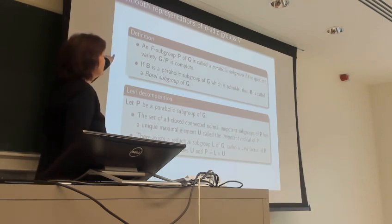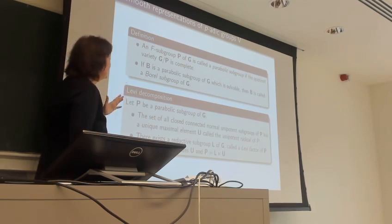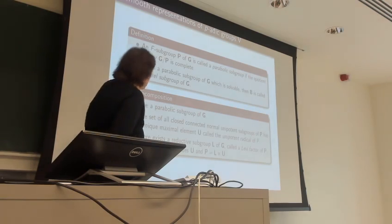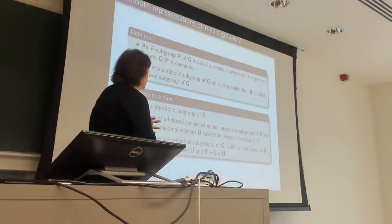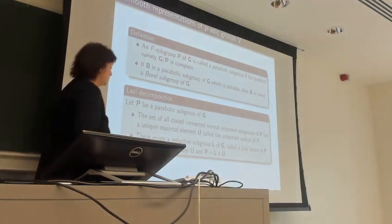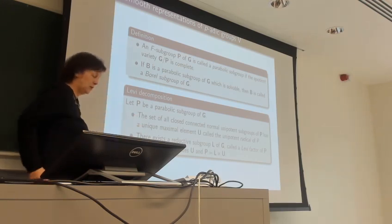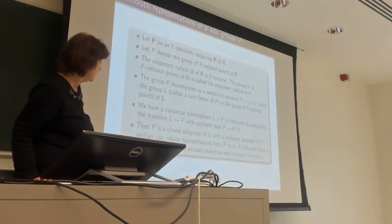In general, a parabolic subgroup is defined as a subgroup such that G/P is a complete variety, and the Borel is the special case that is also solvable. The unipotent radical is the unique maximal closed normal unipotent subgroup of P, and there is a Levi factor L which normalizes U and gives the Levi decomposition P = L ⋉ U. There is a similar decomposition for the F-rational points.